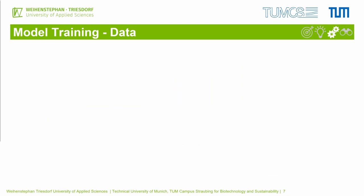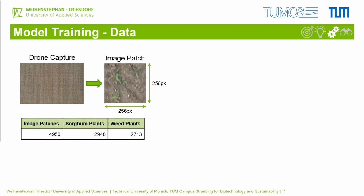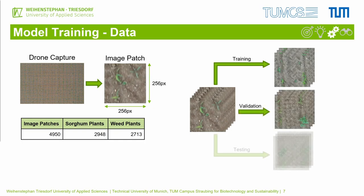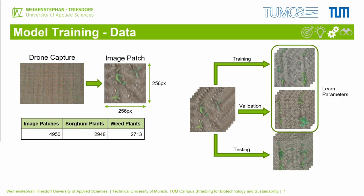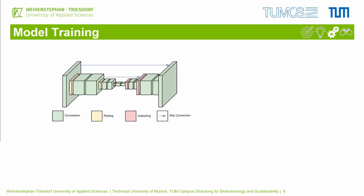Before training a model, we need to prepare the data. The labeled drone captures are split into several patches — we used a size of 256×256 pixels and obtained almost 5000 patches containing around 3000 sorghum plants and 2700 weed plants. Then all these patches were divided into three non-overlapping sets: training, validation and testing. The first two were used to learn the parameters of the model. The test set was only used to check the generalization capabilities on new data. Deep learning models for semantic segmentation are usually built of convolutional, pooling and unpooling layers.